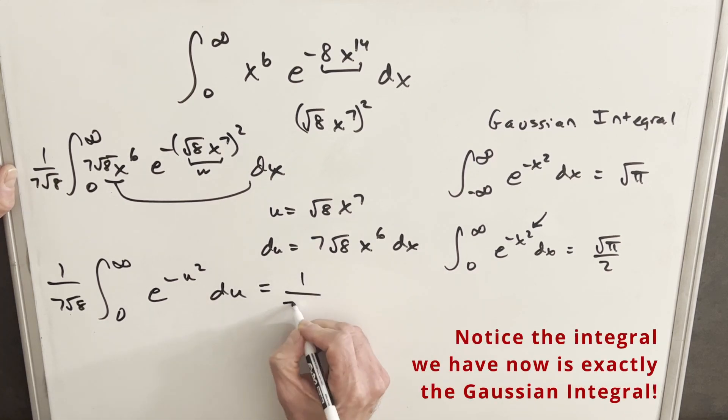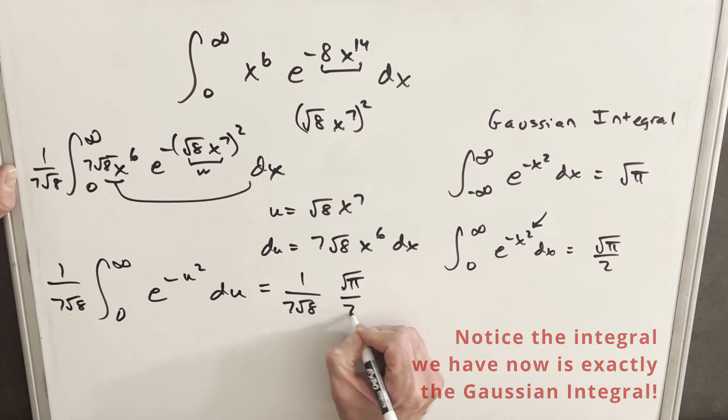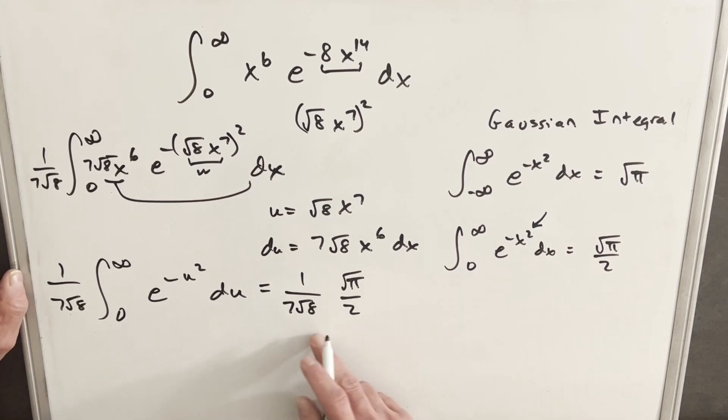Okay, so now writing this answer, we're going to have 1 over 7 square root of 8 times square root of pi over 2. I'm going to do a quick simplification on this. What I'm going to do with my square root of 8, I'm going to use for square root of 8, 2 square root of 2.